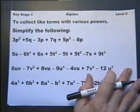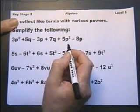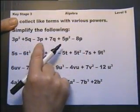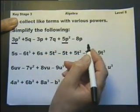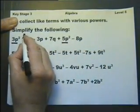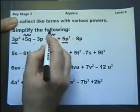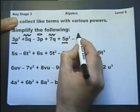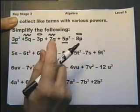Collect terms with various powers. Simplify the following. We look for terms that are what we call like. These two are like because they're both p squared. These are like because they're both q, and these are like because they are p. So let's collect the like terms.